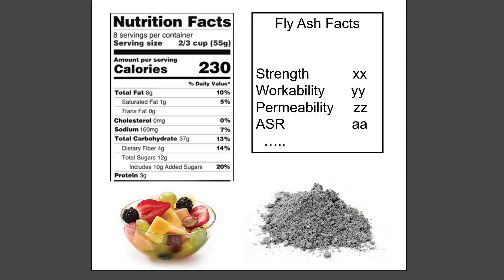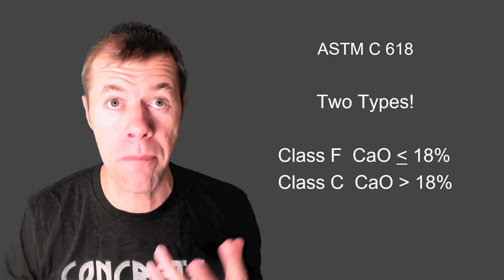Or something like a nutrition label — a document that tells you the amount of cholesterol, sodium, carbs, protein. What if we could do that for fly ash? It would tell us its contribution to strength, permeability, ASR, and things like that. Wouldn't that be awesome?